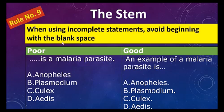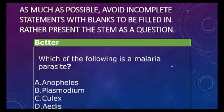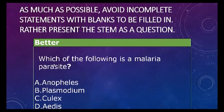Rule number nine: when using incomplete statements, avoid beginning the stem with a blank space. For example, '__ is a malaria parasite' is poor. The better rendition is 'An example of a malaria parasite is ___.' Even better, avoid incomplete statements with blanks altogether and render the item as a direct question: 'Which of the following is a malaria parasite?'